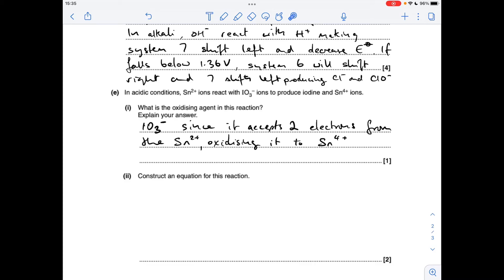Part E, so the oxidising agent is the IO3 minus ion. If you think about what's happening to the tin ions, it's going from tin 2+ to tin 4+, so it's been oxidised. Obviously the IO3 minus ion is doing that, and it's doing that by accepting the two electrons that the tin 2+ has lost.